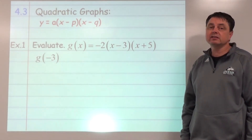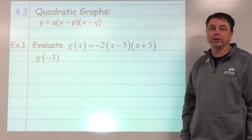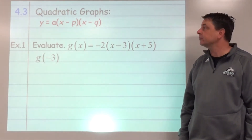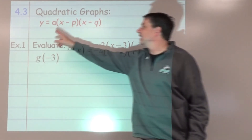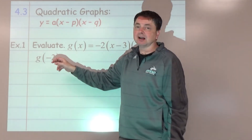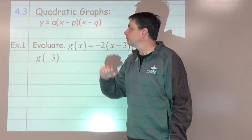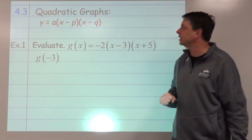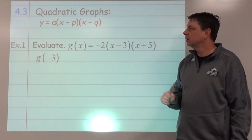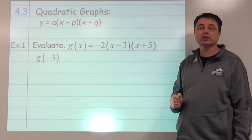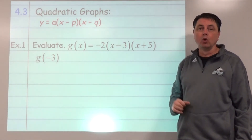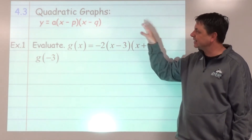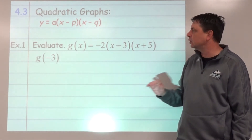Welcome to Hartman Math. This is lesson 4.3: quadratic graphs — y equals a times (x minus p) times (x minus q) — which is known as intercept form or factored form.